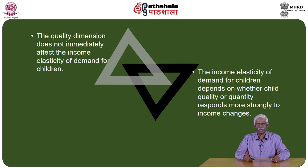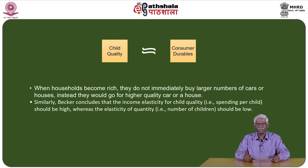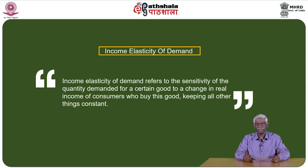The quality dimension does not immediately affect the income elasticity of demand for children; it depends on whether child quality or quantity responds more strongly to income changes. Becker's argument for a low income elasticity of child quantity and a high income elasticity of child quality rests on an analogy with consumer durables: when households become rich they do not buy more cars or houses — instead they buy higher quality. Similarly, the income elasticity for child quality (spending per child) should be high, while the elasticity of quantity (number of children) should be low.